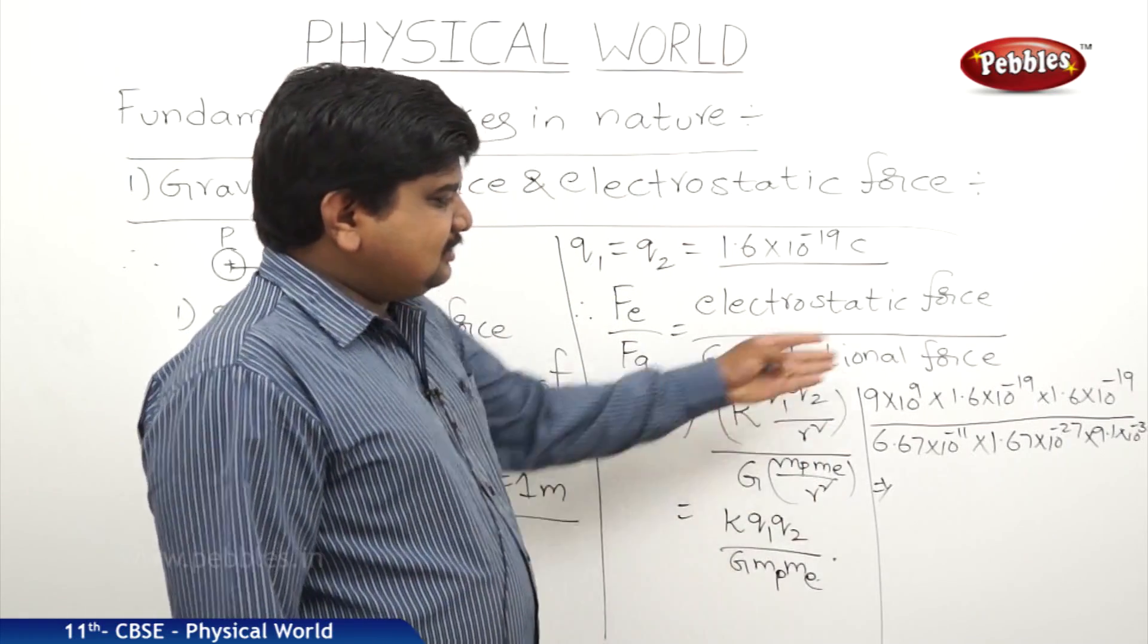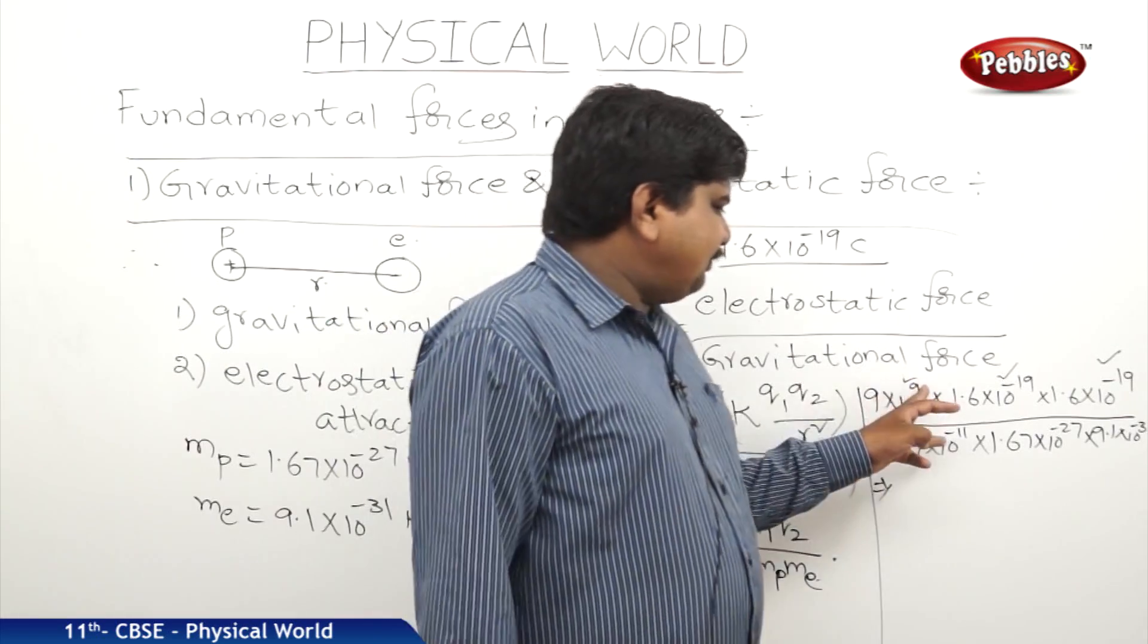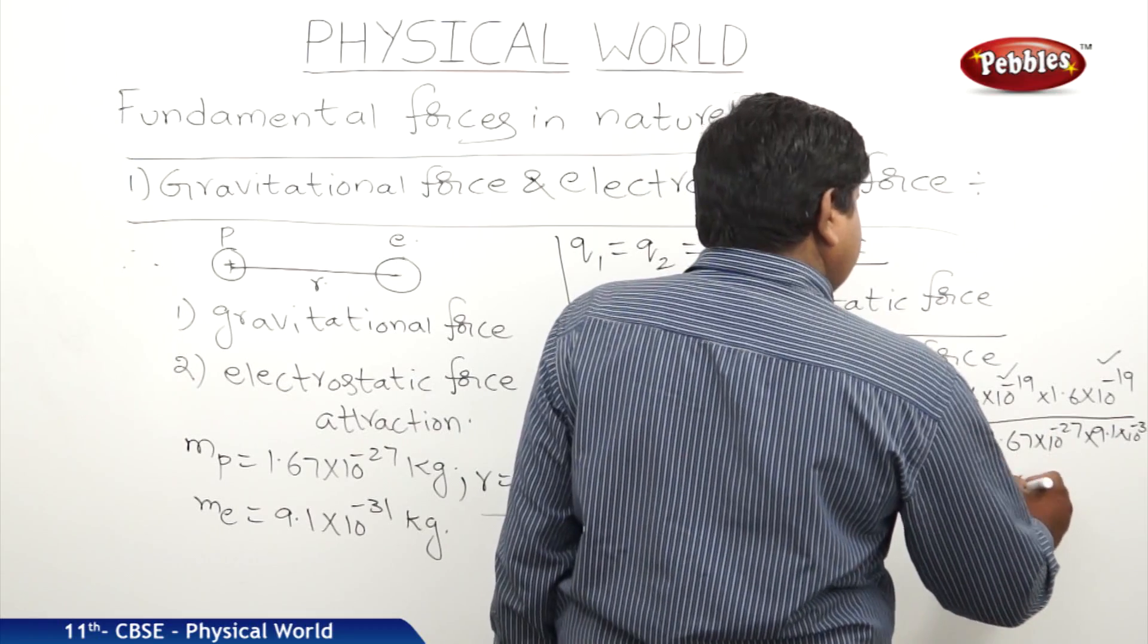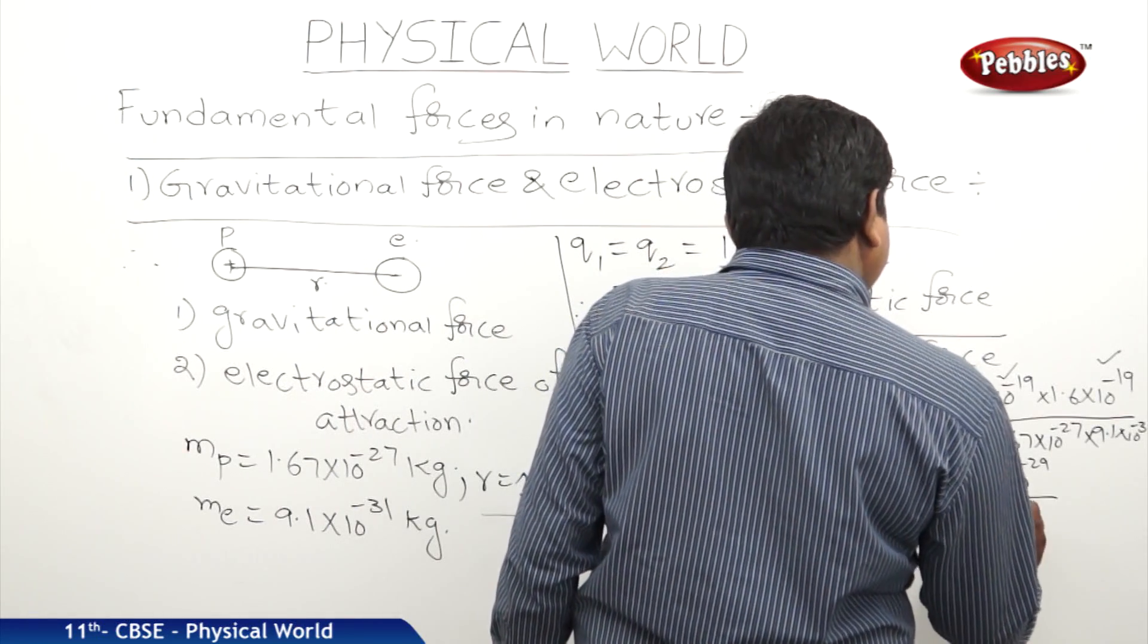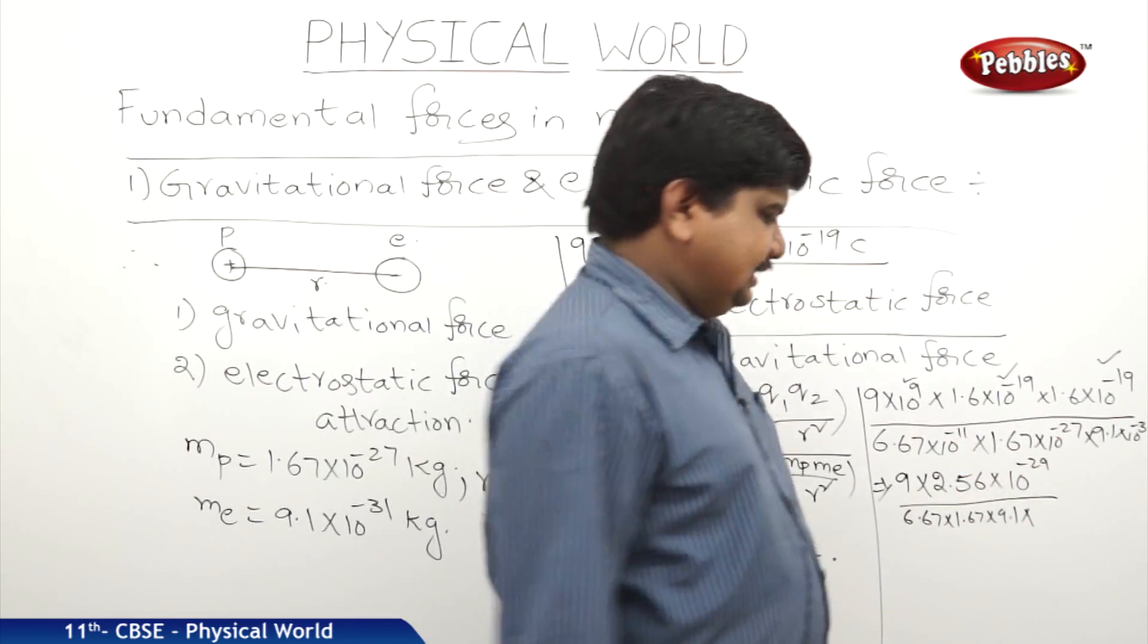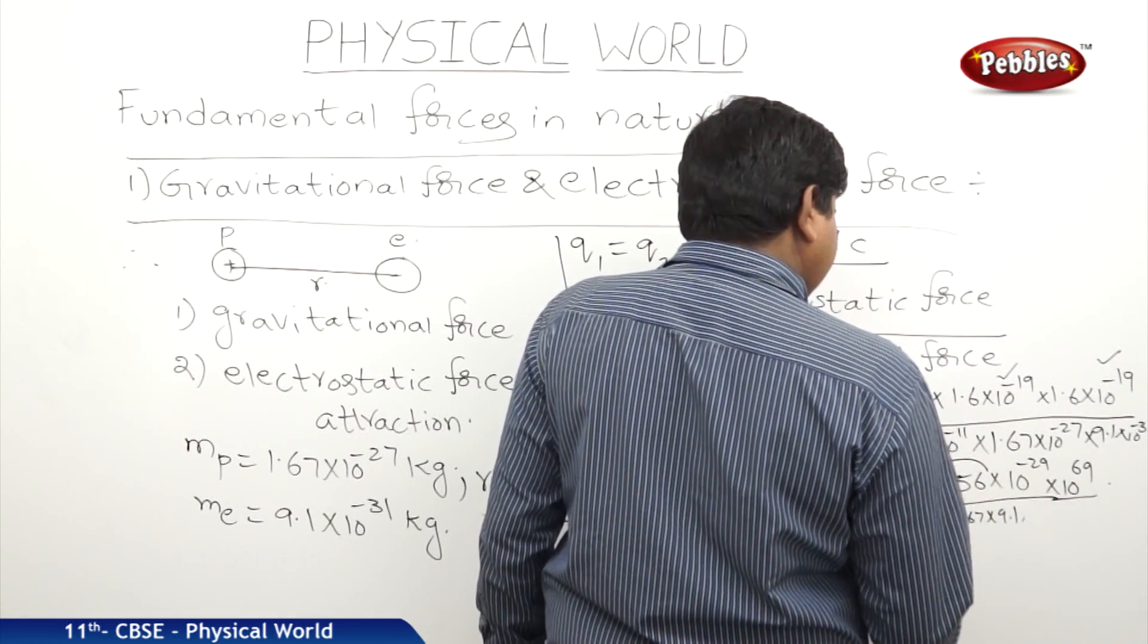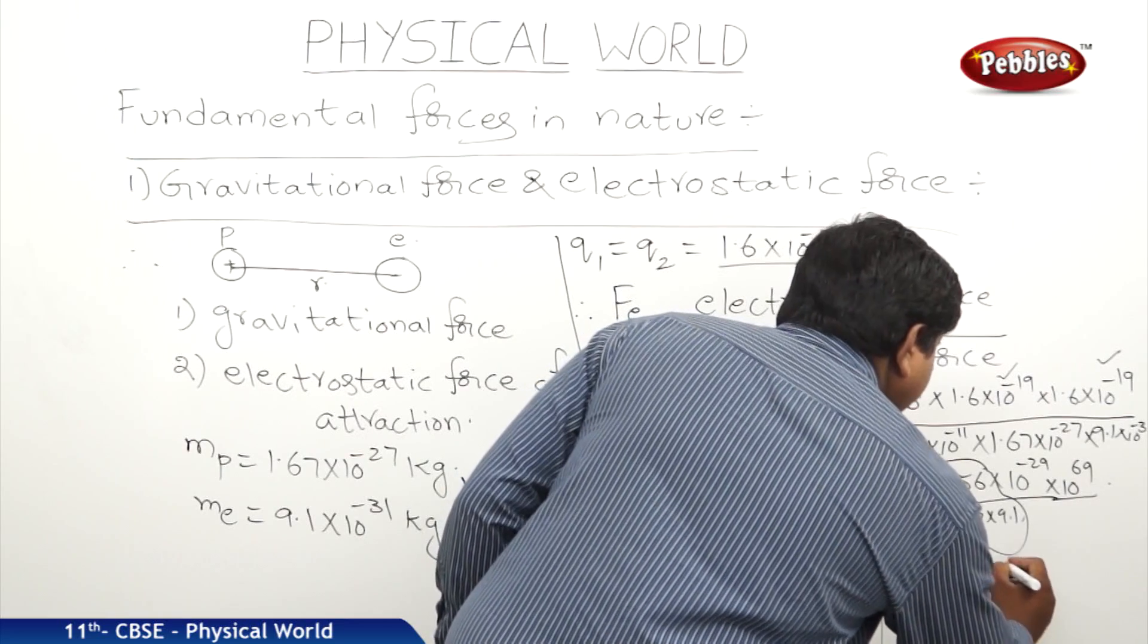We have all 10 powers and some integers also which are multiplying those 10 powers. 10 power 9 minus 19 minus 19 is minus 38. 10 power 9 into 10 to the power of minus 38 is 10 power minus 29. It is 2.56 into 10 to the power of minus 29, whole divided by 6.67 into 1.67 into 9.1 into 10 to the power of minus 69. And this minus 69 was going to top and it becoming plus 69. We will get FE by FG is approximately equal to 2 into 10 to the power of 39.